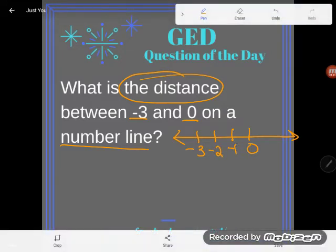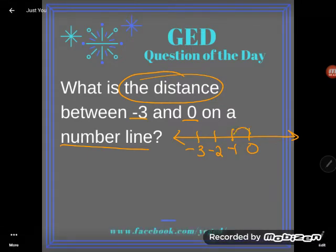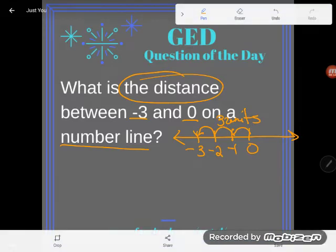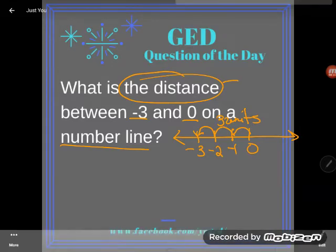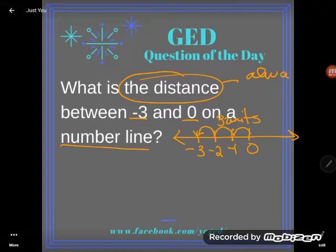Now, what is the distance? How far away are those? Remember, when you count distance, we just count. So one, two, three units away. Three units away. Notice I don't say it's negative three away. It's three units away. That's because distance is always positive.